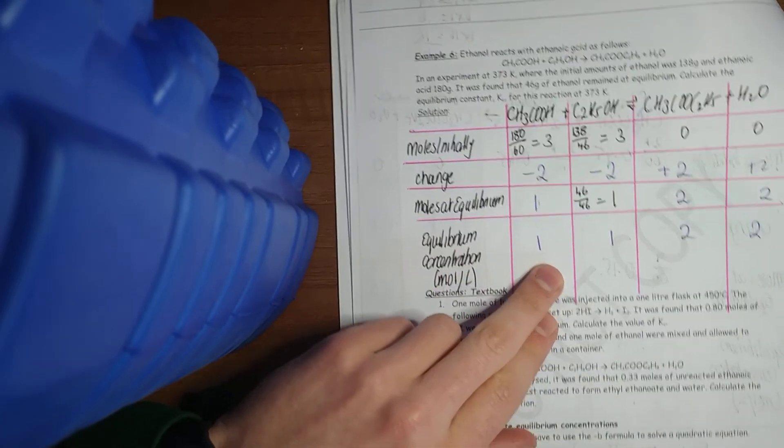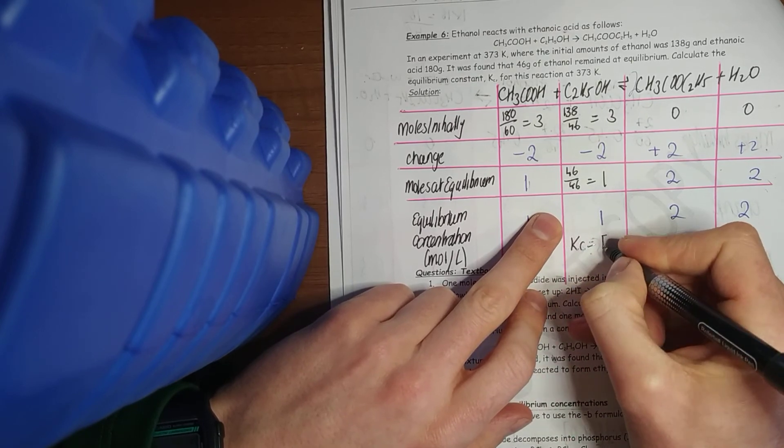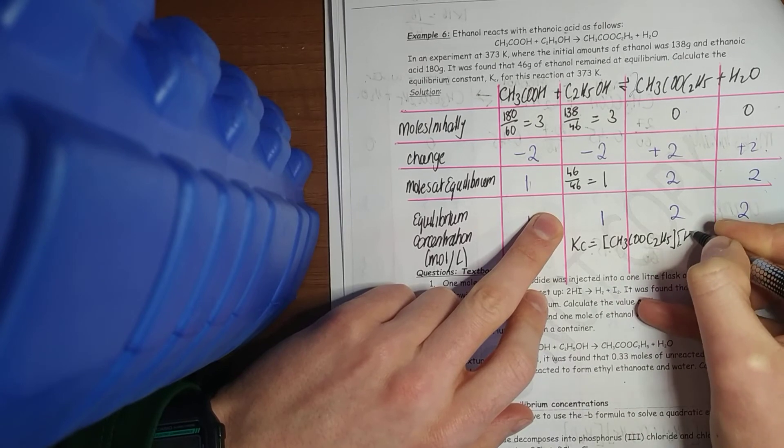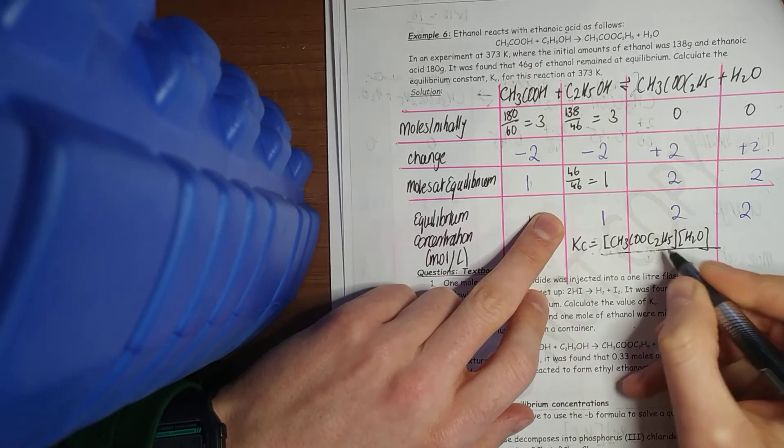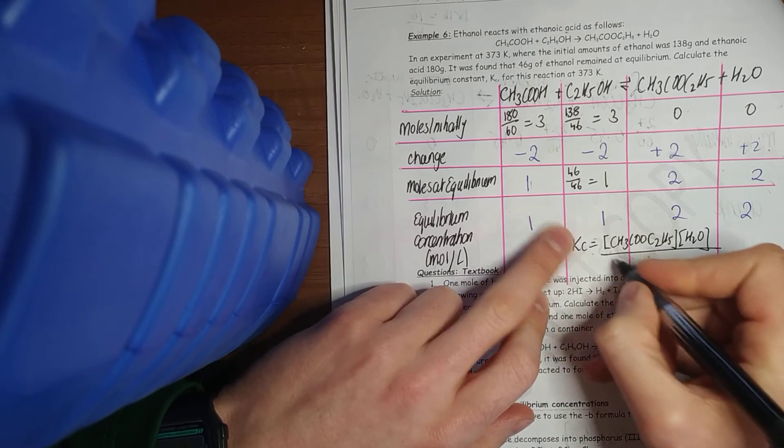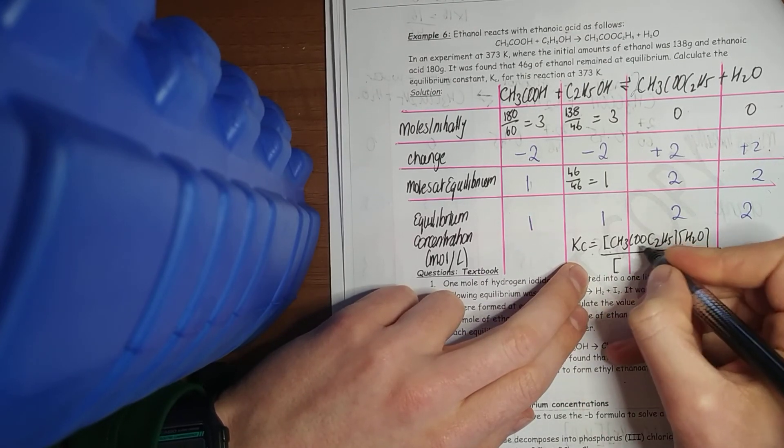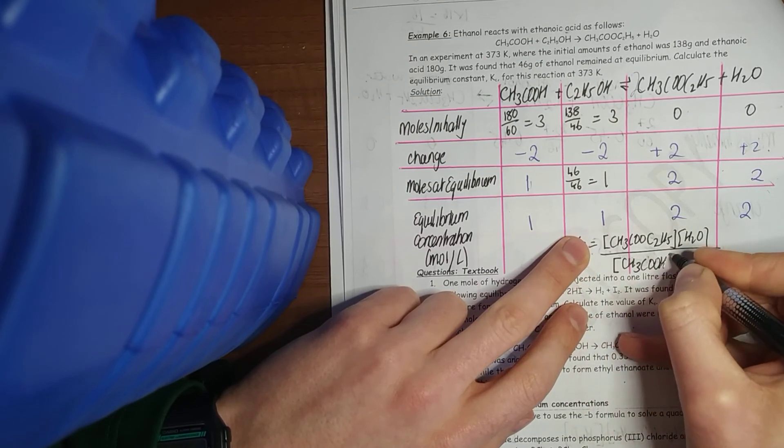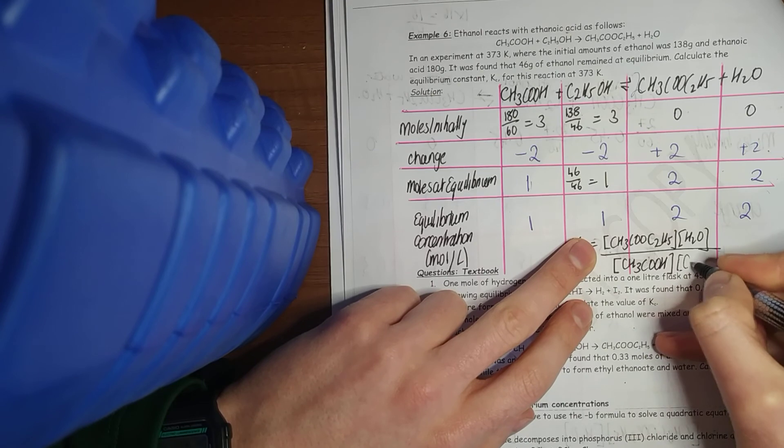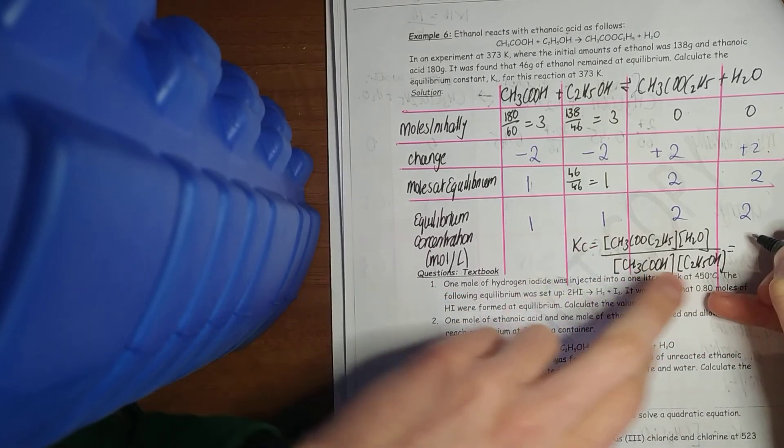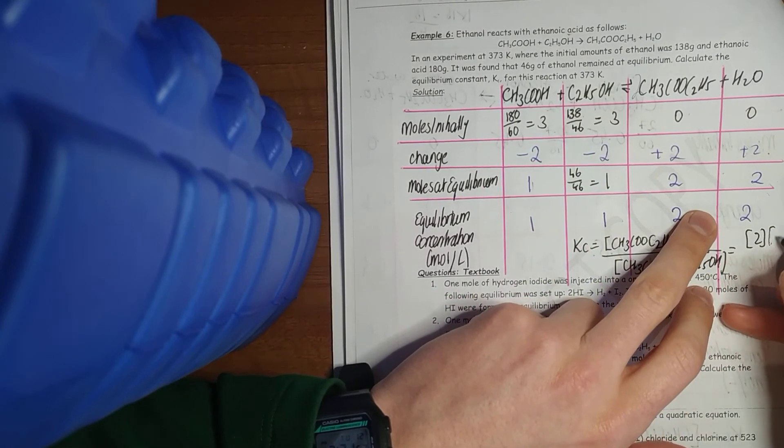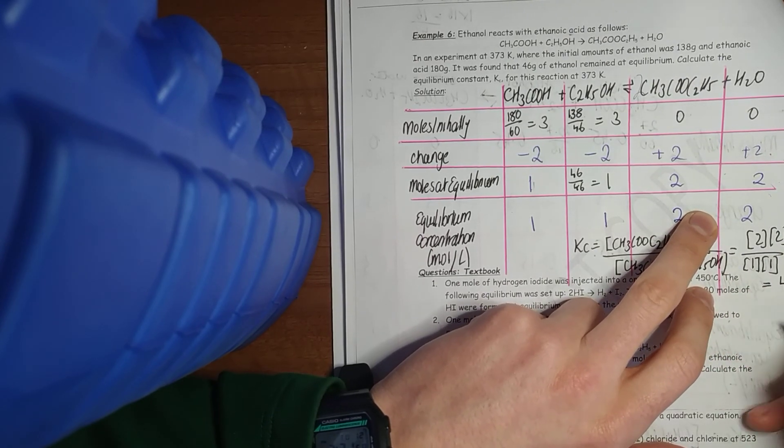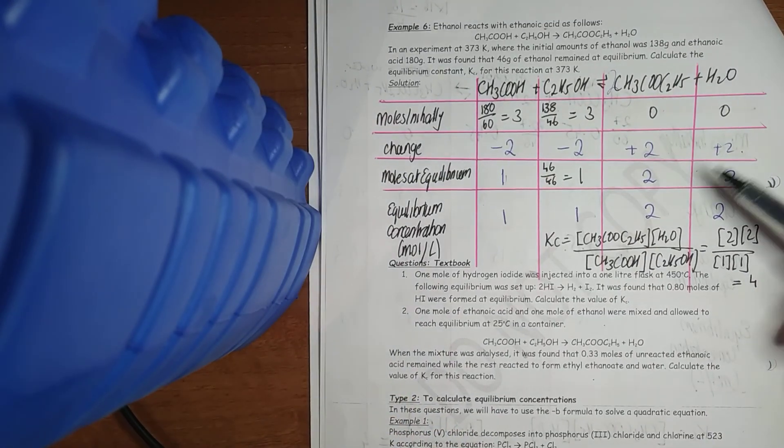And to work out KC, it's my products over my reactants. I'll just squeeze it in. CH3COOC2H5 times H2O. What have we got there? Ethyl ethanoate. Draw it out for yourself. Your carbonyl group and your oxygen going down. Made a mistake in that in the exams, remember. CH3COOH, C2H5OH. Throw in your figures now. 2, 2, over 1, times 1 in moles per liter. And you get a value of 4. Equilibrium constant is 4.